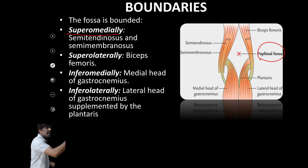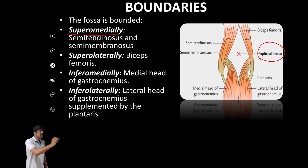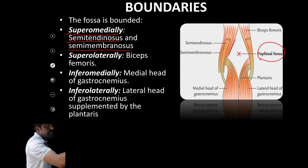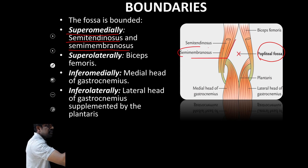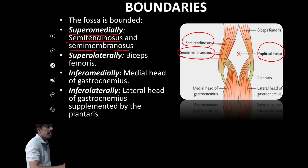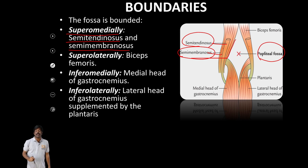Superomedially, there are two muscles: semitendinosus and semimembranosus. You can see here two muscles — semimembranosus and semitendinosus. This is the superomedial boundary.